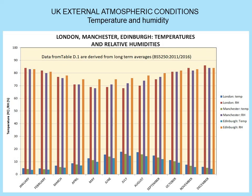Looking at external atmospheric conditions is quite interesting, because as we'll see in later modules, external conditions make significant changes to internal conditions. In the colder months, the relative humidities outside — between London, Manchester and Edinburgh — are all over 80% on average. External water vapor can significantly influence internal levels.